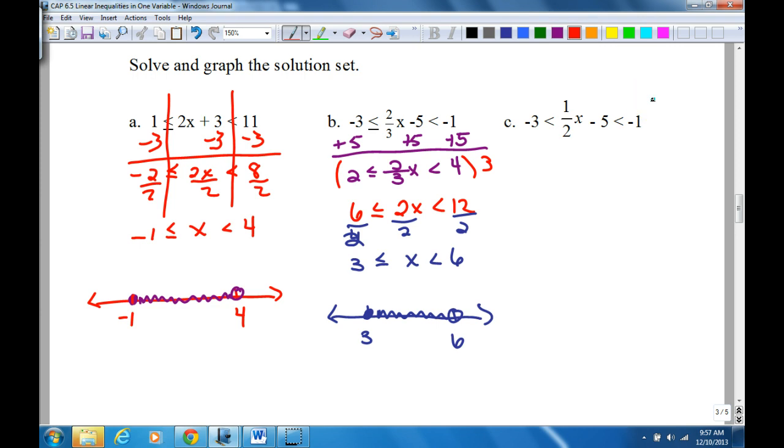For C. Add 5. So we got 2 less than 1 half x less than 4. Multiply everything by 2 to get rid of that fraction. So we have 4 less than x less than 8.